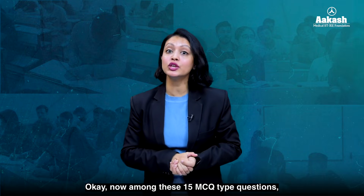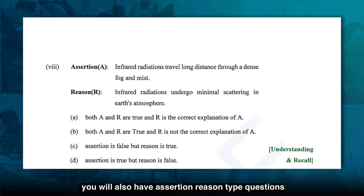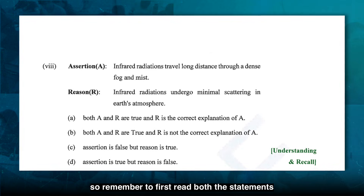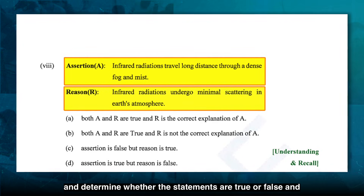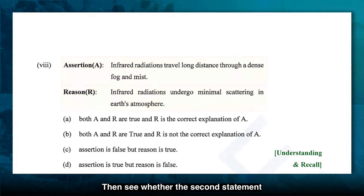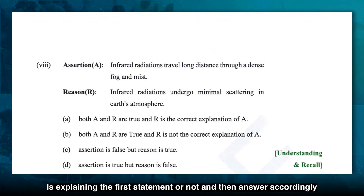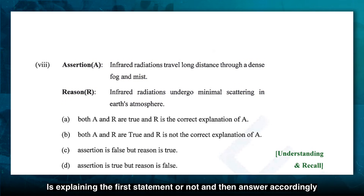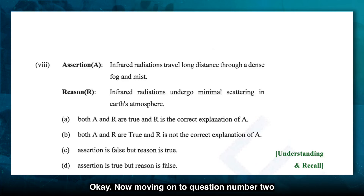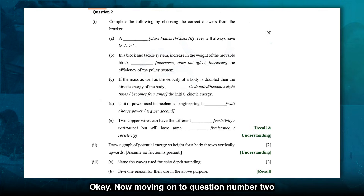Among these 15 MCQ type questions, you will also have assertion-reason type questions. Remember to first read both statements and determine whether they are true or false. Then see whether the second statement is explaining the first statement or not, and then answer accordingly. Here also you don't have to write the explanation, only the correct option. Now moving on to question number two.